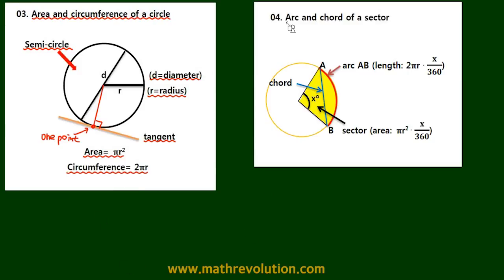Next is arc and the chord of a sector. So arc is this line AB, this red line here, and the length is 2πr times x over 360 degrees. And this yellow area is called the sector, and its area is calculated by πr² times x over 360.